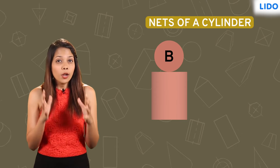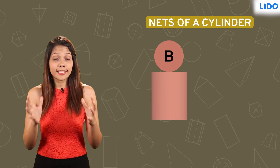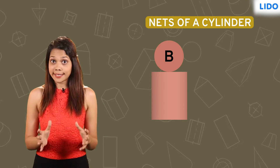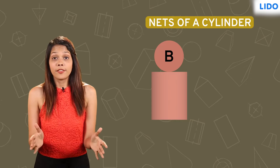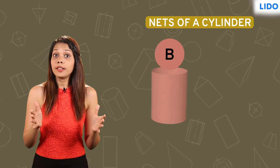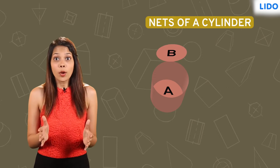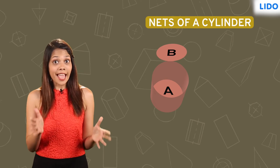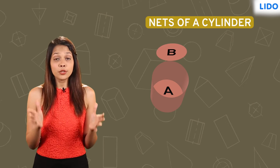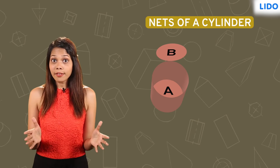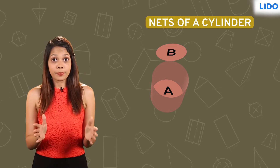Upon rolling along the circular edge, the rectangular face stands upright. Look, we've successfully formed a hollow cylinder with two out of the three flat shapes.